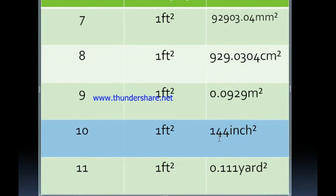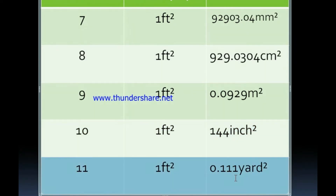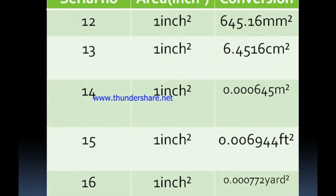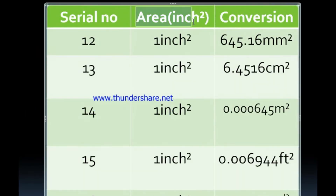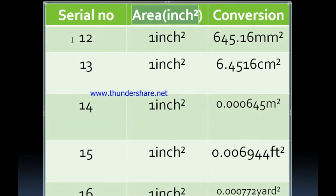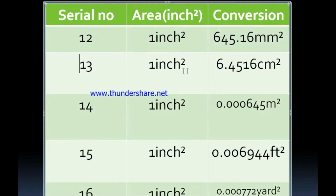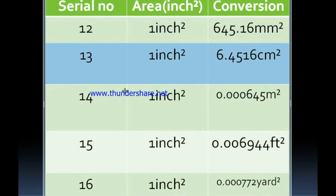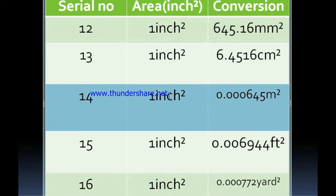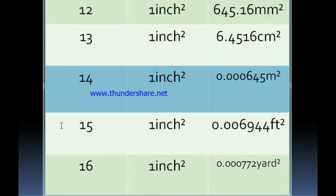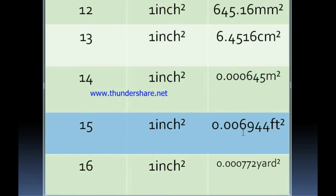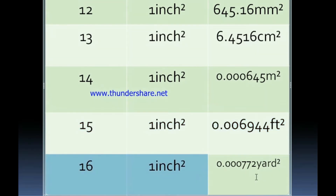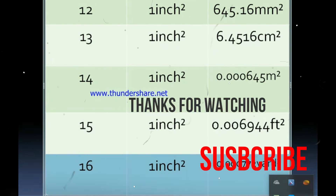0.00929 square meter, square feet 0.111, square yard 0.111. Square feet 0.00644, 0.00694, 0.00944, 0.00694 square feet. This is 0.000770.